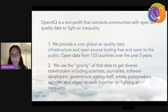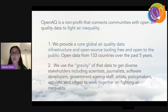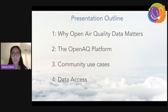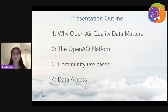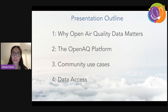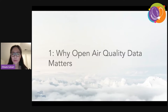Since its inception in 2015, we've been collecting data from 133 countries around the globe. We aim to use the gravity of that data so that we can get diverse stakeholders — including scientists, journalists, software developers, government agencies, artists, and policy makers — to work together to fight air inequality. As a brief outline, I'll be talking about why open air quality data matters, the OpenAQ platform, community use cases, and a brief demo on how to access the data.